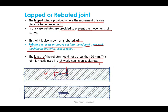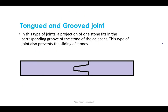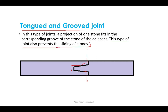The third type is the tanked and grooved joint, also called the joggle joint. In this type of joint, a projection of one stone fits in the corresponding groove of the adjacent stone, thus preventing the sliding of stones.